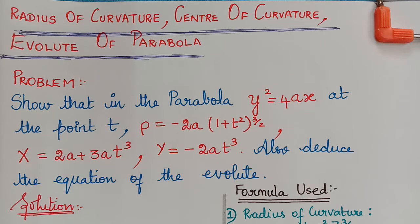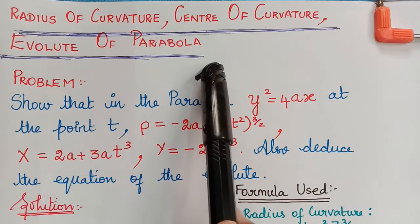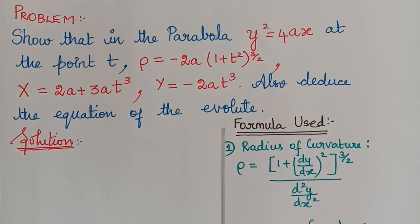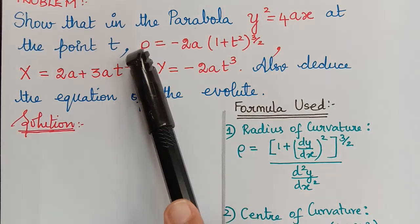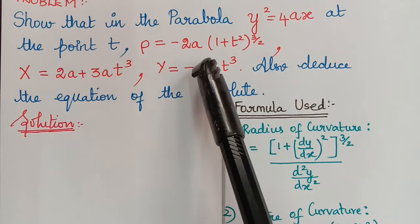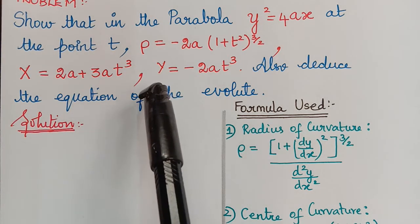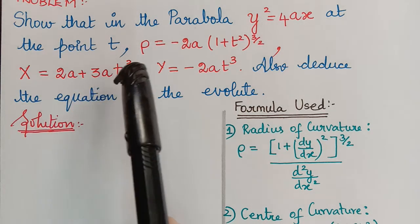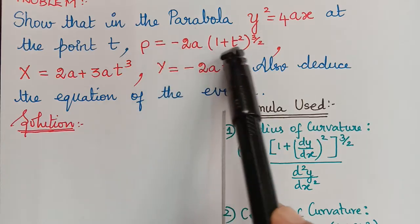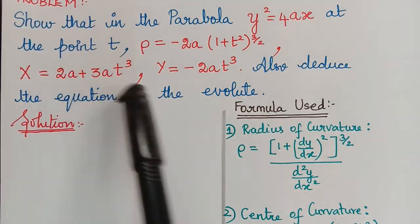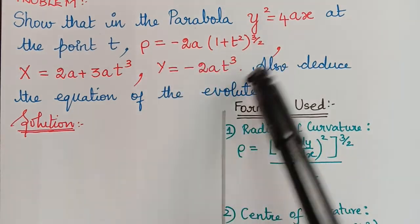Dear students, in this lecture we are going to learn about the radius of curvature, center of curvature, and how to find the evolute of a parabola. The first problem is: show that in the parabola y² = 4ax at the point t, the radius of curvature ρ equals -2a(1+t²)^(3/2), and the coordinates of the center of curvature are X = 2a + 3at² and Y = -2at³. We also have to deduce the equation of the evolute.